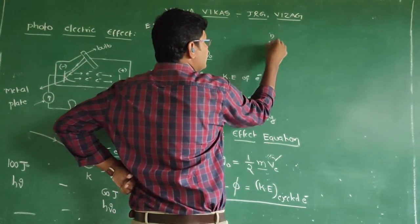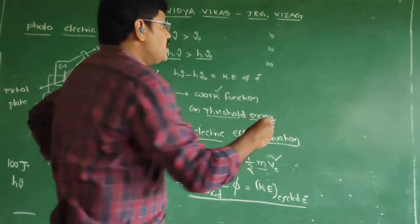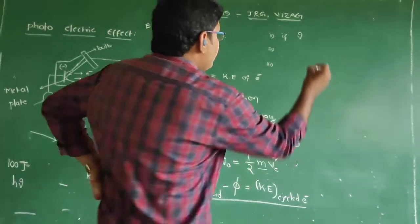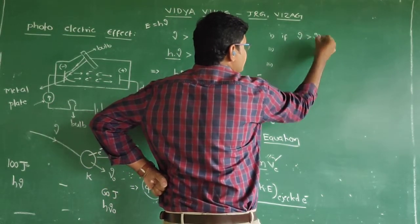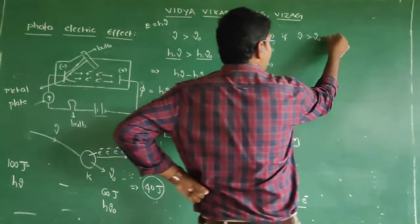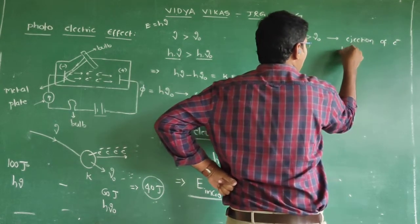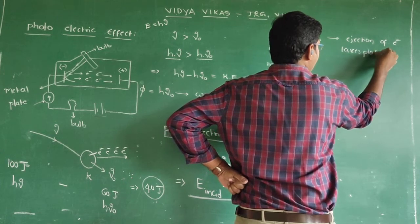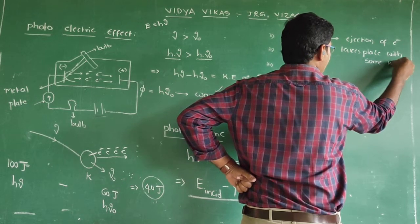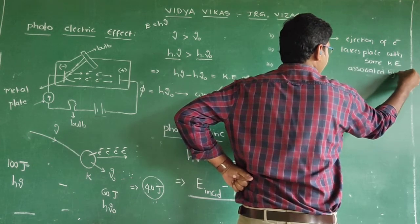Let me come to three different cases important from an examination point of view. The first case: if incident light frequency is greater than threshold frequency (μ > μ₀), what happens? Ejection of electrons takes place with some kinetic energy associated with the electrons.